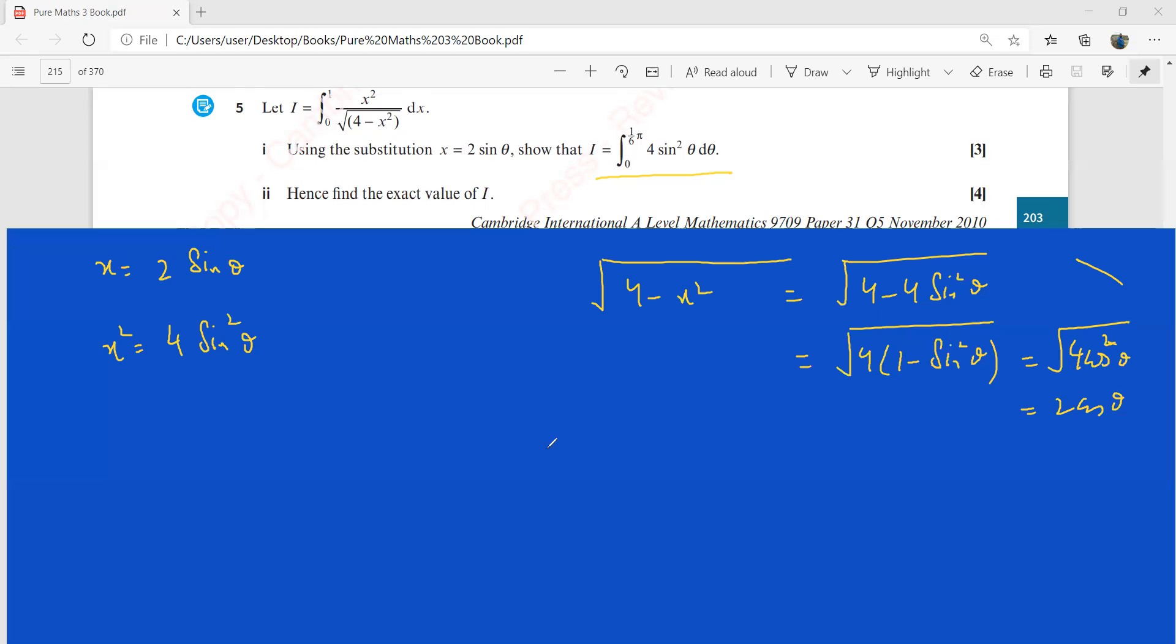So if I start plugging in the values here, this is going to be 4 sine squared theta over this one, which is going to be 2 cos theta.